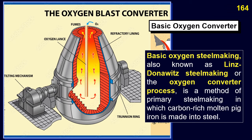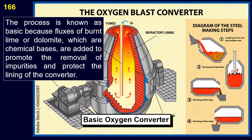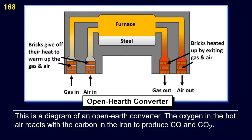Basic Oxygen Steelmaking, also known as Linz-Donawitz Steelmaking or the Oxygen Converter Process, is a method of primary steelmaking in which carbon-rich molten pig iron is made into steel. Blowing oxygen through molten pig iron lowers the carbon content of the alloy and changes it into low-carbon steel. The process is known as 'basic' because fluxes of burnt lime or dolomite — which are chemical bases — are added to promote the removal of impurities and protect the lining of the converter. Another process for converting carbon-rich iron into steel is the open-hearth converter. This is a diagram of an open-hearth converter; the oxygen in the hot air reacts with the carbon in the iron to produce CO and CO₂.